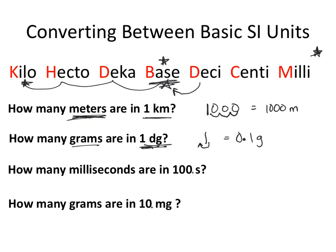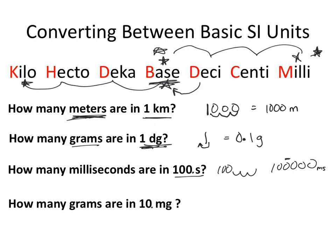For another example, we have 100. seconds — notice the decimal at the end, so there are three significant digits. We're converting from seconds to milliseconds: seconds is the base, and milli is three spaces to the right. Moving the decimal three spaces to the right gives us 100,000 milliseconds. We need to indicate three sig figs, so we can either write this in scientific notation or use the bar method to mark that third digit as significant.